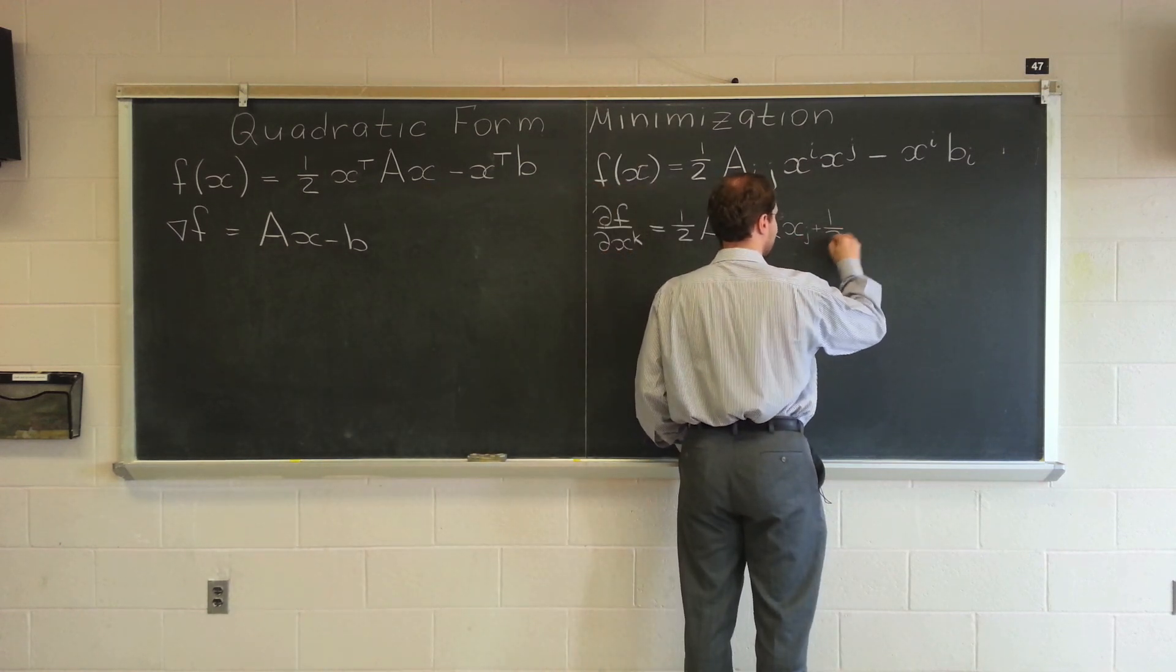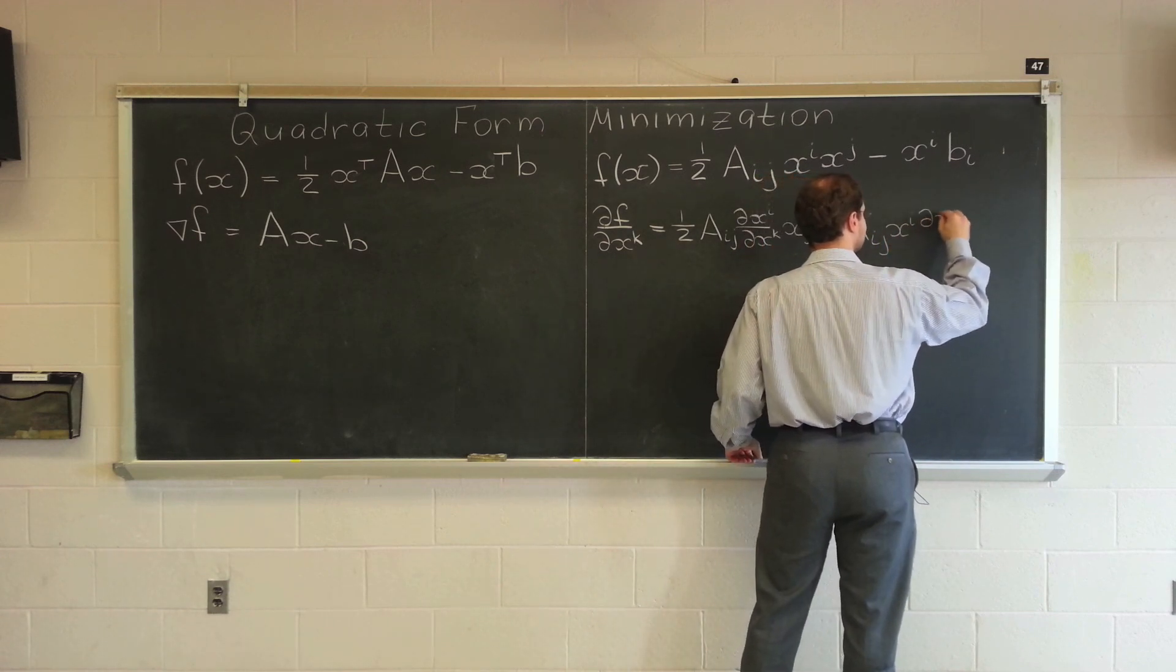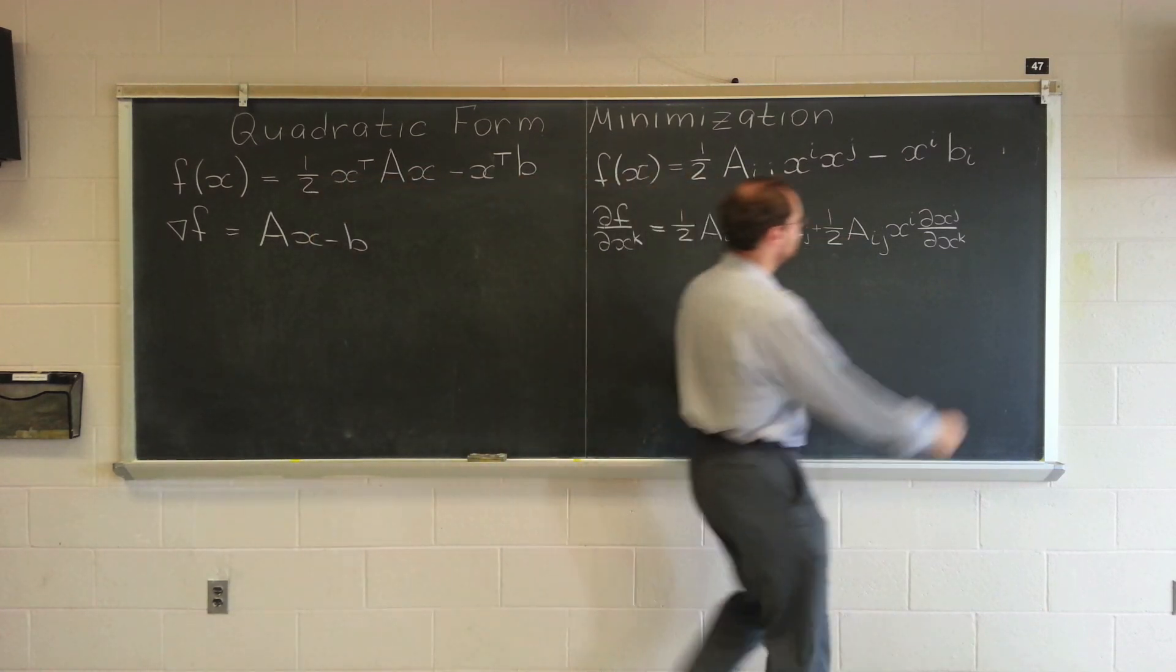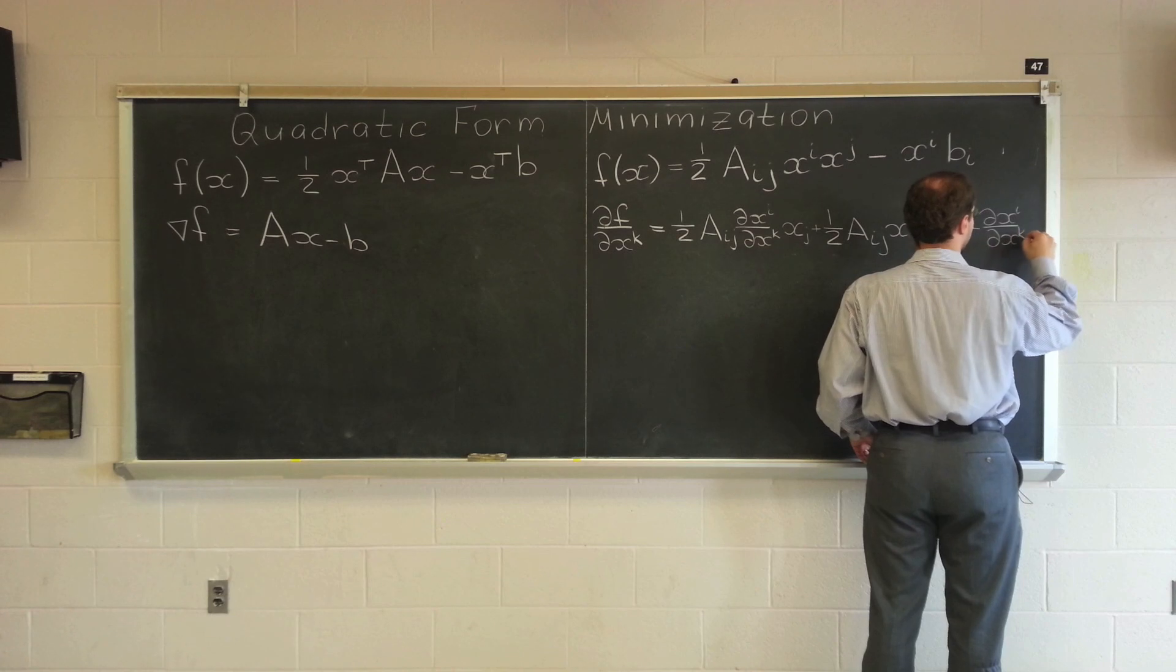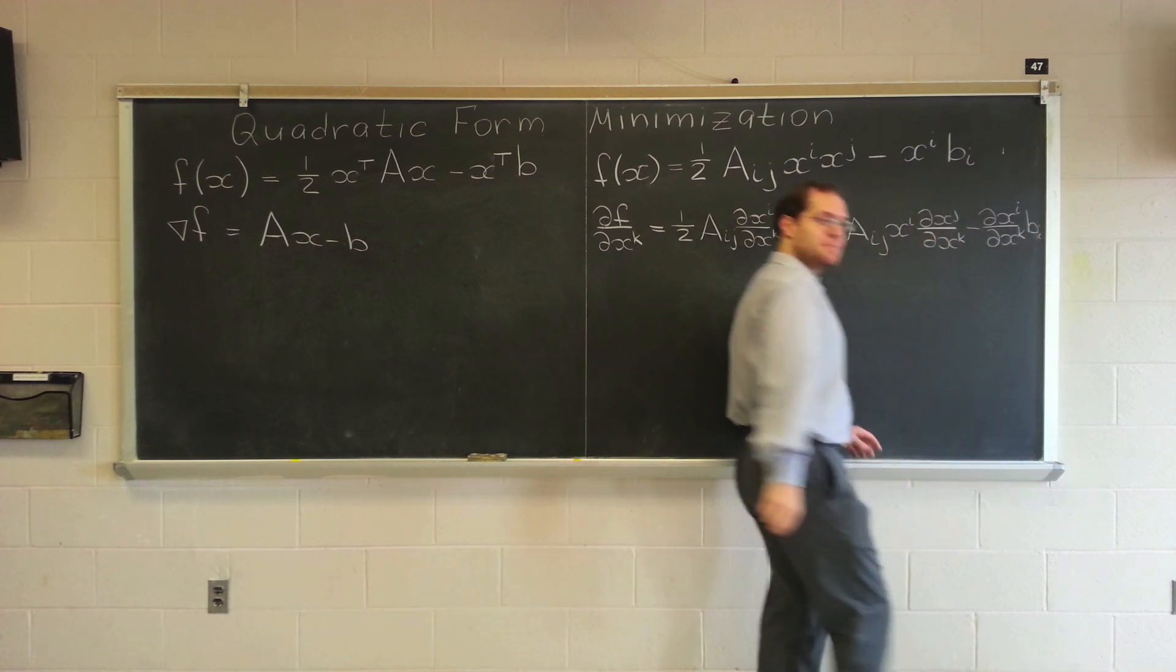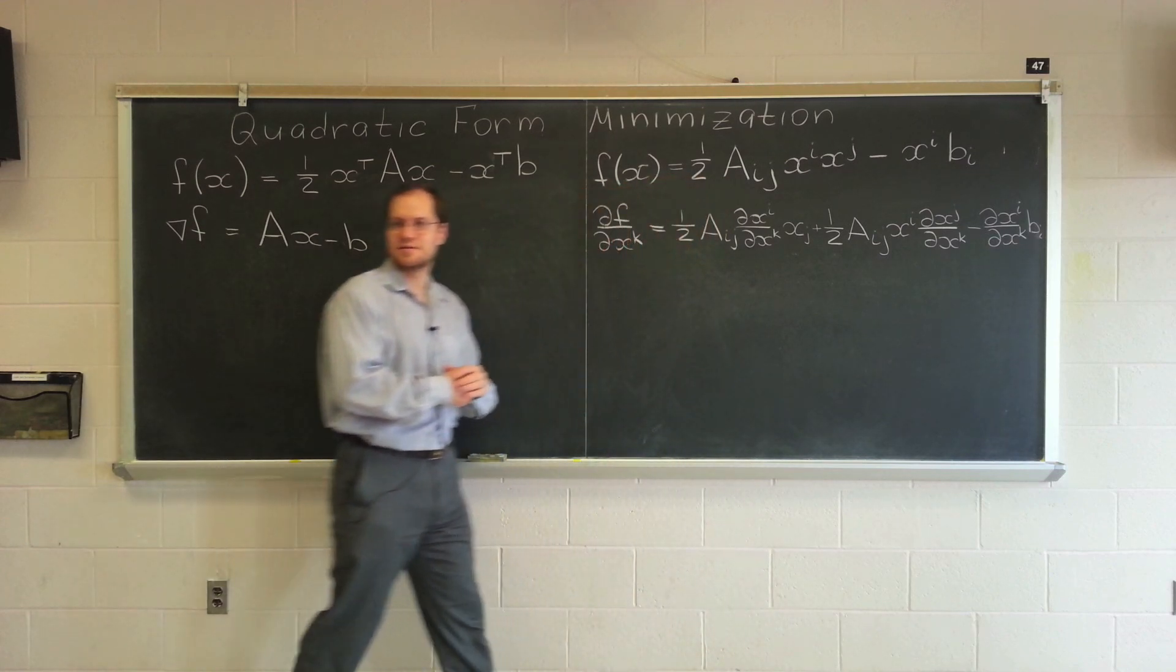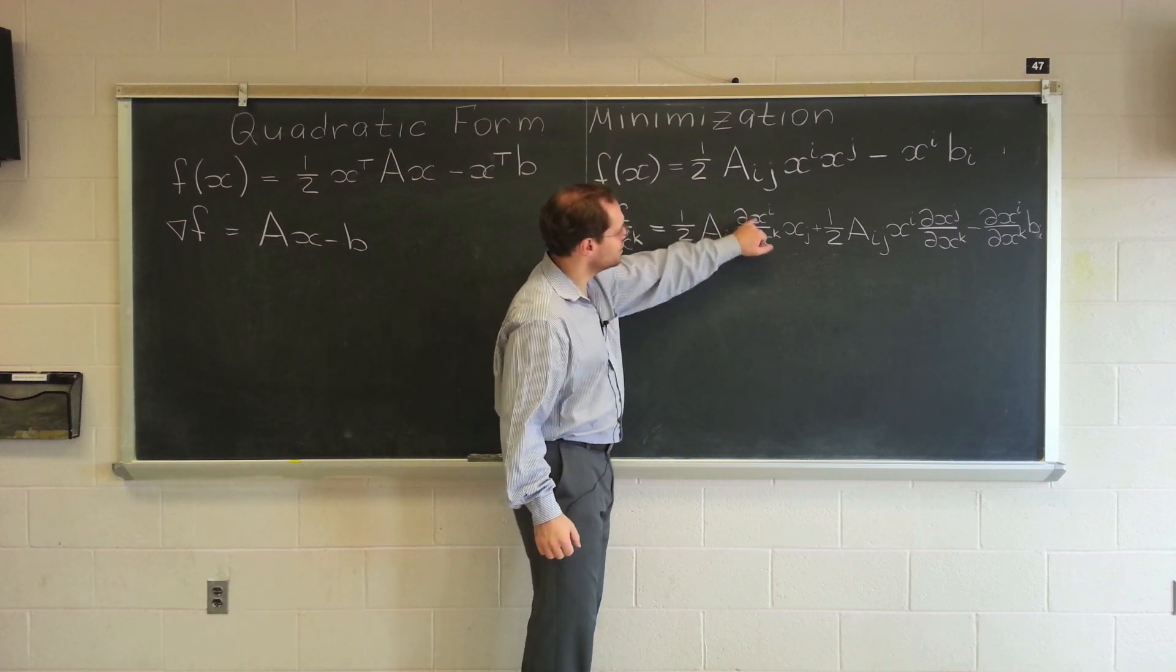And I will have one half A_ij dx_i/dx_k x_j. Do you guys agree? Here, this being the first step of the product rule. Plus, one half A_ij, leave x_i alone, dx_j/dx_k. Minus dx_i/dx_k b_i. And at this point, I usually take a step back and make sure all the indices work quite nicely. Basically, k is the live index. I and j and i in this expression are contracted away. It's the dummy index. Everything's matching.